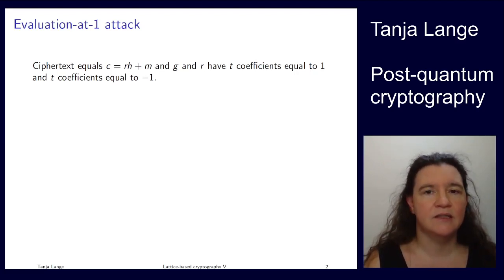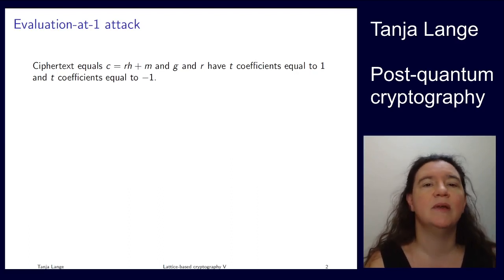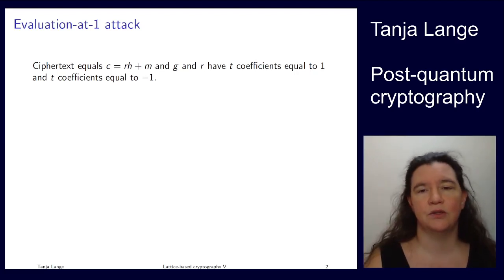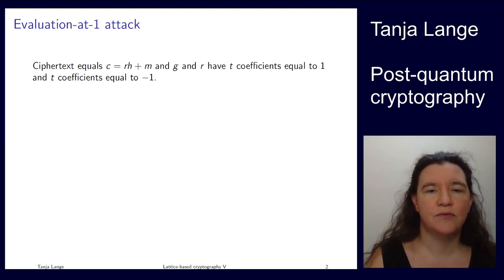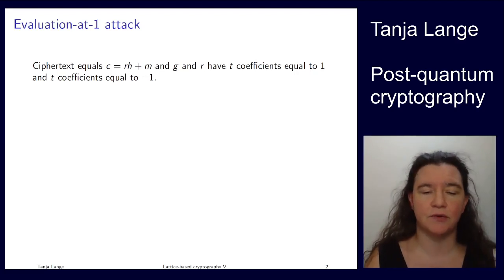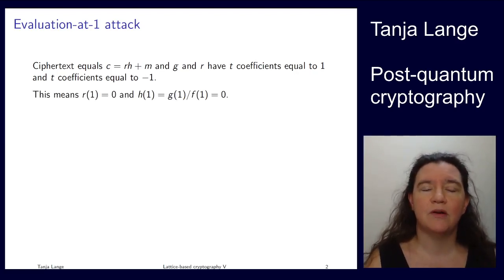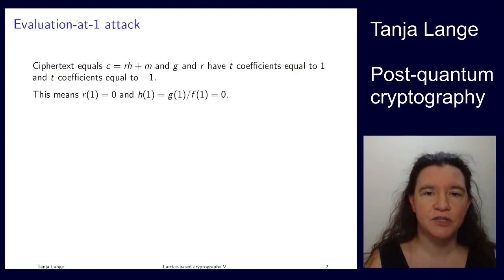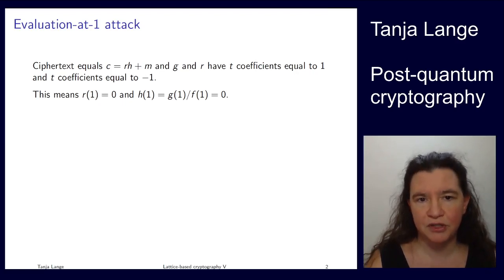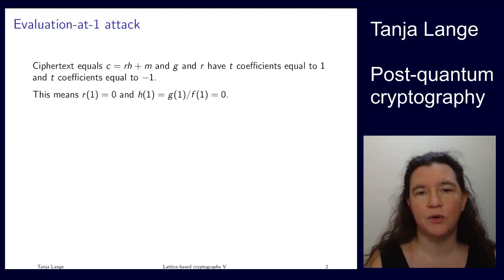Because R has this fixed number of coefficients equal to 1 and to minus 1, if you compute R of 1, all the powers of x turn into 1s. So you are just getting the coefficients in front of it — getting plus t minus t, which gives 0. So if we compute R of 1, we are getting 0. Similarly, the definition of g also had the same conditions: t coefficients equal to 1, t coefficients equal to minus 1. So also H, the public key evaluated at 1, gives you 0.